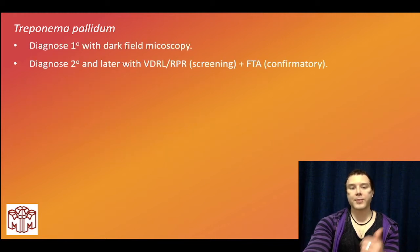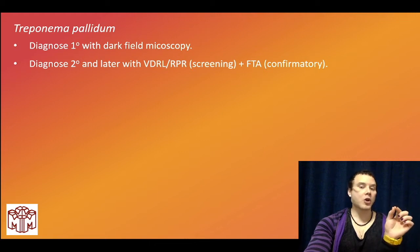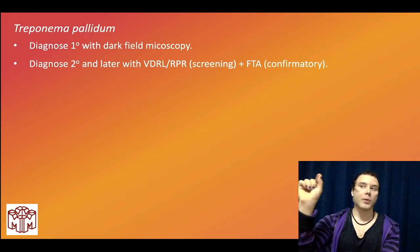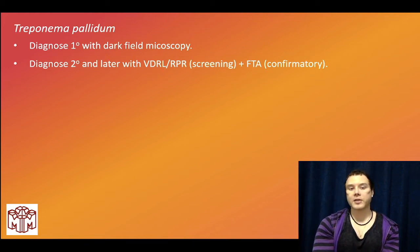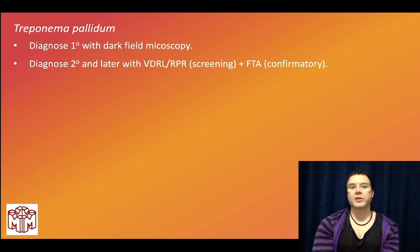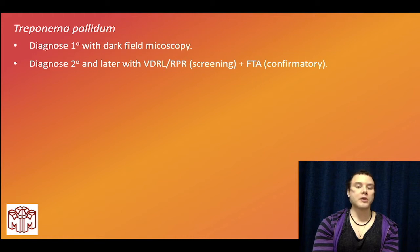Dark-field microscopy is used for visualization of a biopsy of a chancre. For tertiary syphilis, biopsy of the gumma shows plasma cell infiltration with vasculitis. For secondary syphilis and later, we can do serology. VDRL and RPR are two screening tests for syphilis — sensitive but not specific. We can get false positives in lupus. Fluorescent treponemal antibody (FTA) is confirmatory.